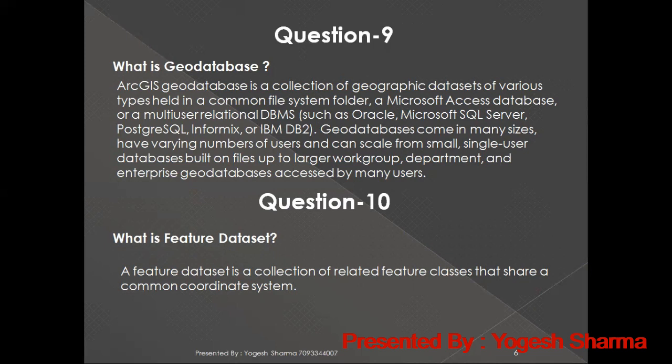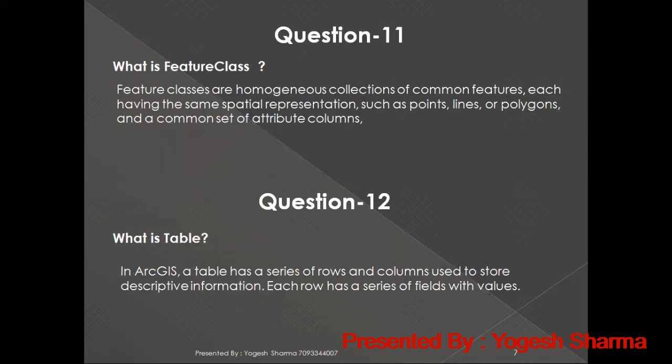What is a feature class? Feature classes are a homogeneous collection of common features, each having the same spatial representation — such as point, line, or polygon — and a common set of attribute columns. What is a table? A table is the same as a feature class, with one key difference: a feature class can contain spatial information, but a table cannot. A table is a non-spatial entity where we cannot store spatial information.